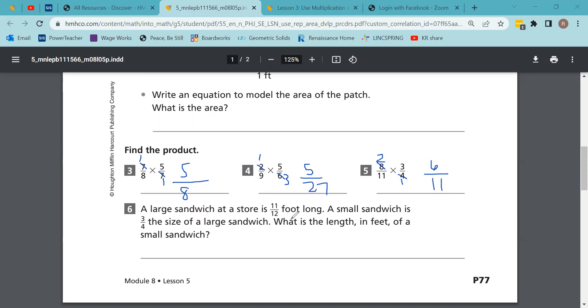Number six: A large sandwich at a store is eleven-twelfths of a foot long. A small is three-fourths the size. What is the length in feet of a small sandwich? You have three-fourths of eleven-twelfths. You've still got the same opportunities to cross cancel - divide by three, that's one, divide by three, that's a four. It looks like eleven-sixteenths of a foot is the small sandwich.